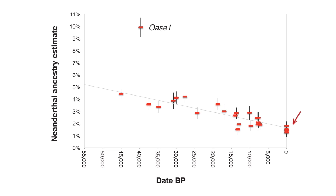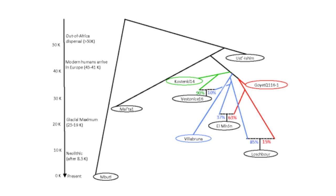The second big change is that at the end of the last glacial maximum, around 19,000 years ago, a population lineage which had not been observed in our dataset in Europe for 15,000 years reappears. It seems to have been hiding out in a pocket somewhere.